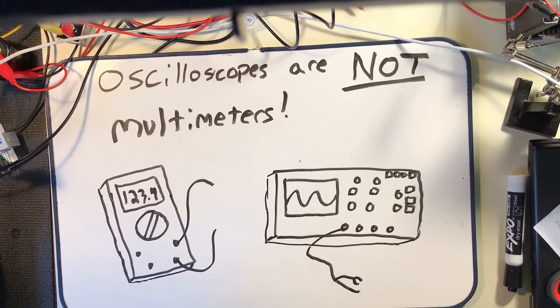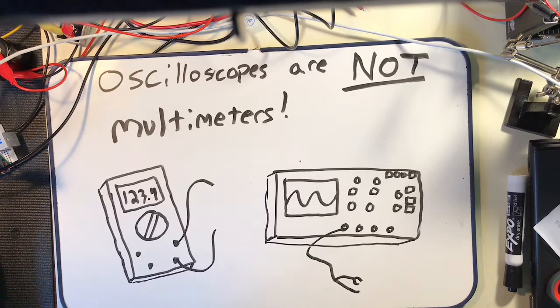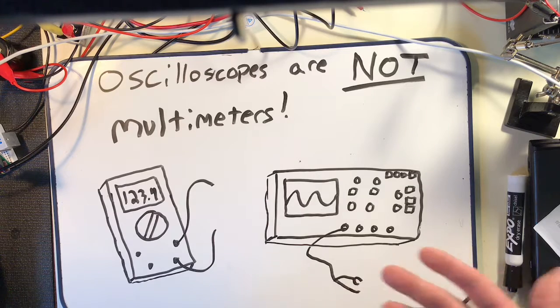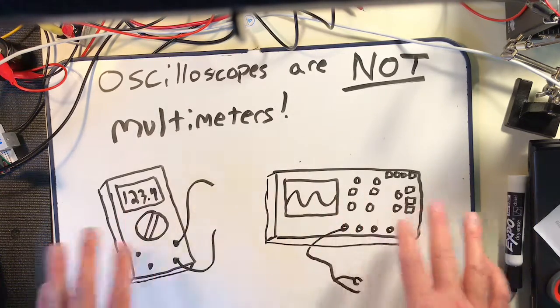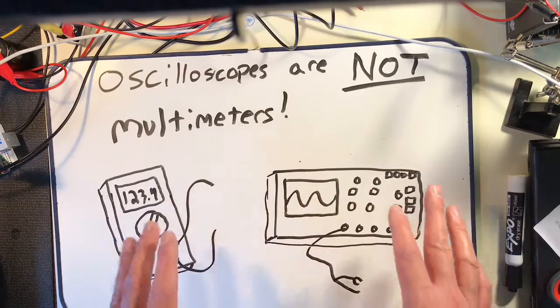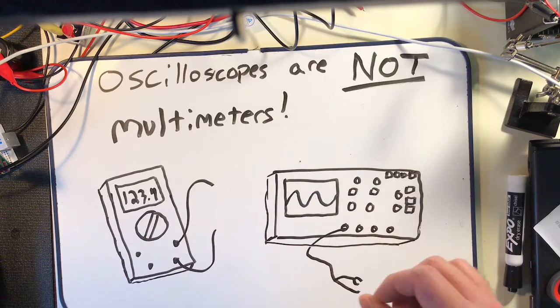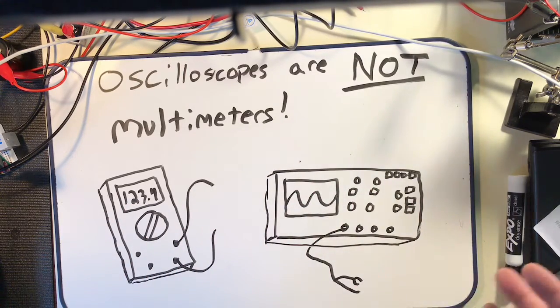While this isn't exactly 100% related to BMET, this is still a pretty important safety video to make because in the labs there are usually oscilloscopes and multimeters, and they can both be used for lots of different purposes, even not necessarily just for electronics.